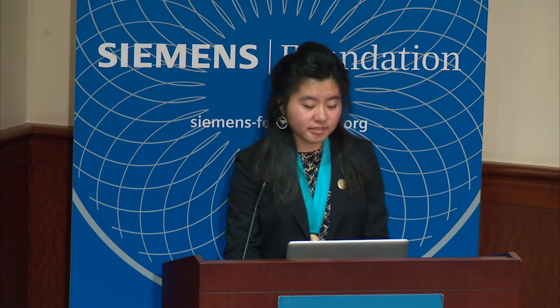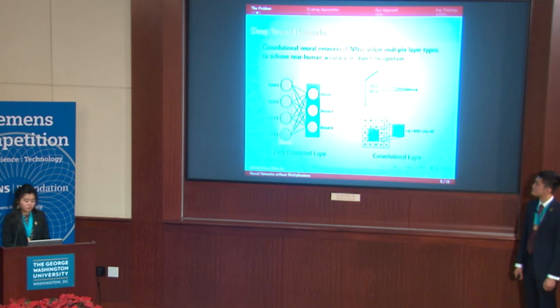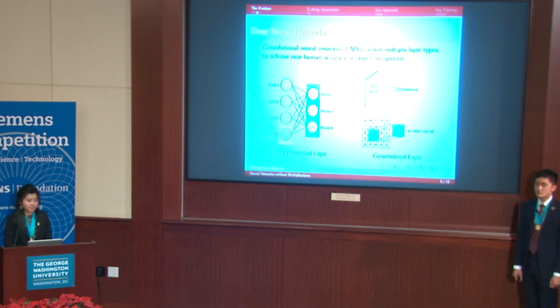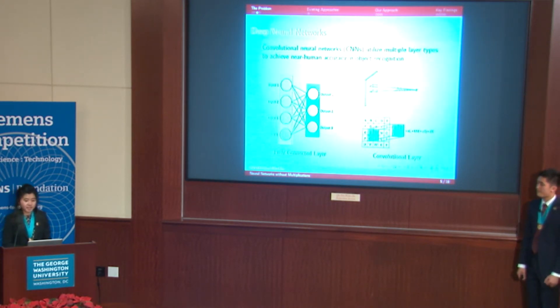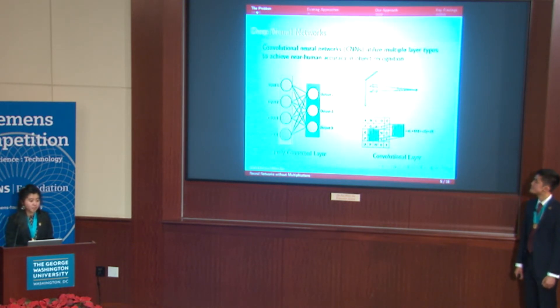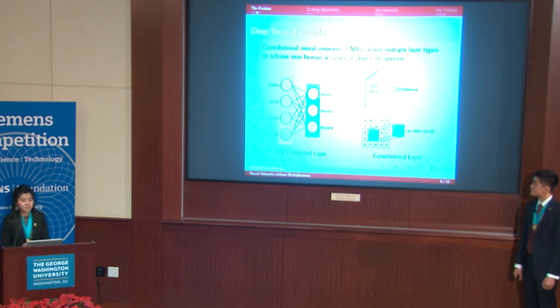Most modern computer vision-based neural networks rely on linking multiple types of layers together. Two key layer types are fully connected layers and convolutional layers. Fully connected layers are responsible for object detection and classification. In such a layer, each input neuron is connected to each output. The arrows between the neurons represent the multiplication of each input by a specific weight value, and the convergence of these arrows to the output represents the addition of the resulting products.